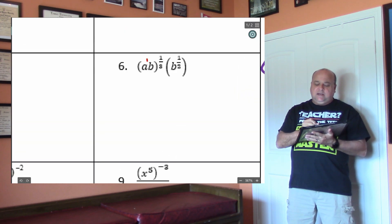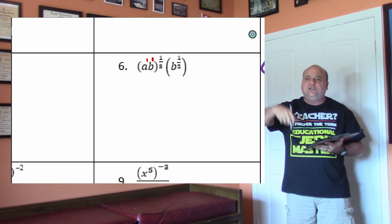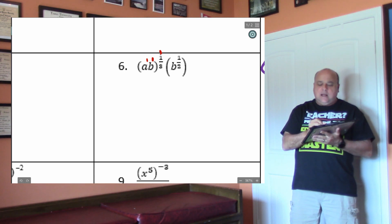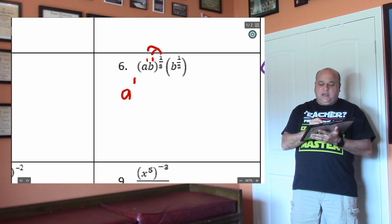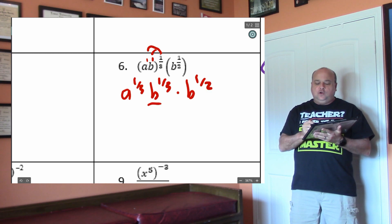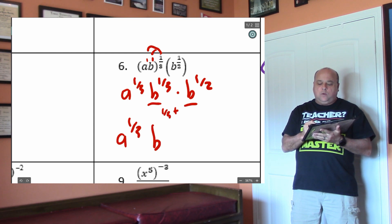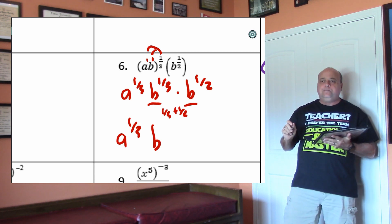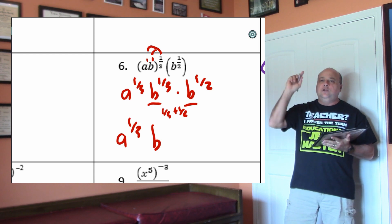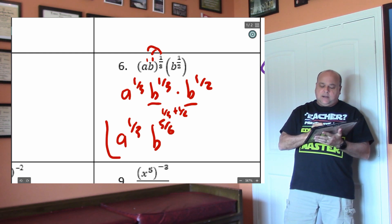On number 6, remember these bases have a 1 power. You want to get rid of all the parentheses first, then you're either going to add or subtract your exponents. To get rid of the parentheses, multiply this 1 third to these two exponents. So I'll have x to the 1 third, b to the 1 third, and times b to the 1 half. Notice I have two b's, so I'm going to have a to the 1 third and then b to the 1 third plus 1 half. Punch this into the calculator — 1 third plus 1 half is 5/6. So this right here would be my answer.